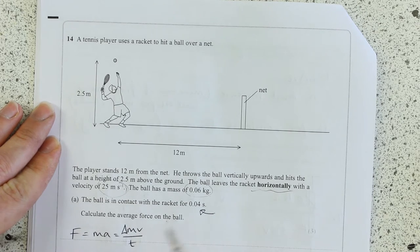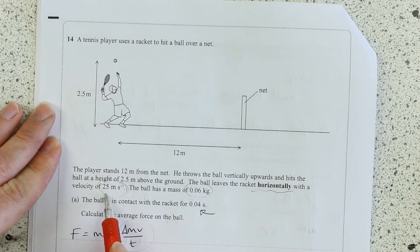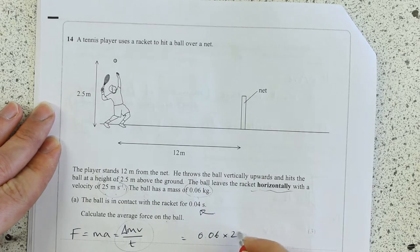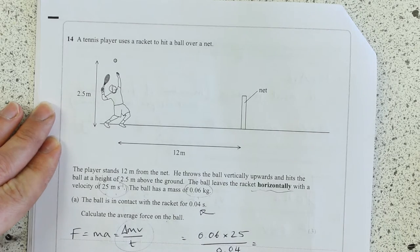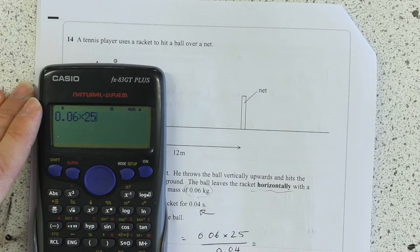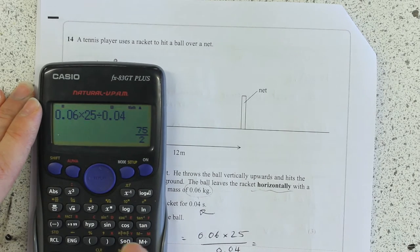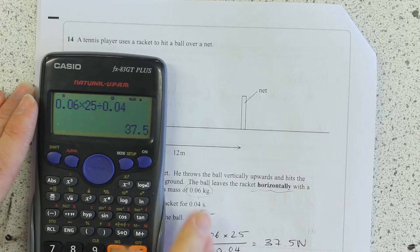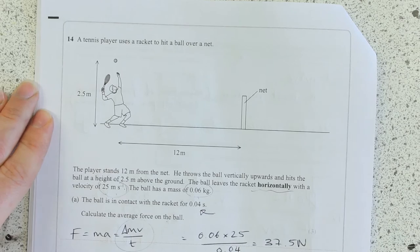I mean they're both exactly the same. I'll just use that one because I've got mass and I've got velocity. Okay, so 0.06 times 25 over 0.04 gives me 37.5 Newtons. I'm happy with that. I hope you are too.